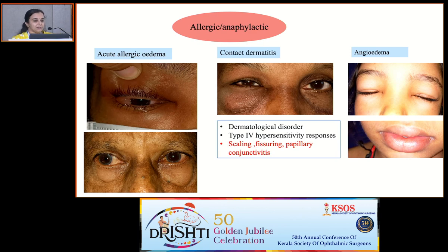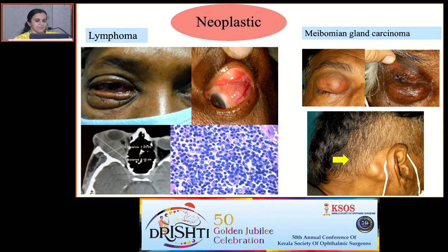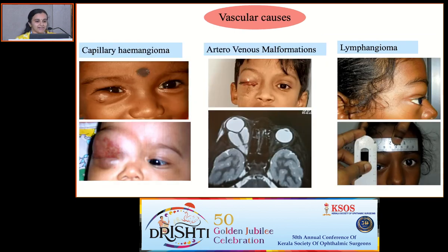Lid edema due to allergic etiology will be usually painless. It can be a simple allergic edema on exposure to various irritants, or life-threatening angioedema. Sometimes it can be the masquerade of underlying neoplastic conditions, so always make a habit of checking for lymph nodes because it can change the whole treatment plan. Vascular lesions can present with lid edema with a bluish tinge. Here we have to look for pulsations, compressibility, and variation with cough or Valsalva maneuver.